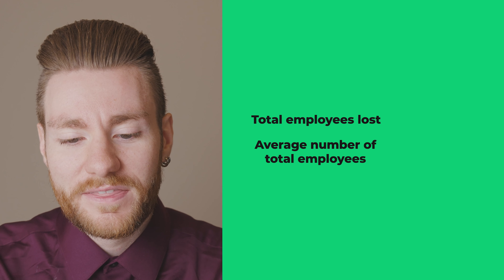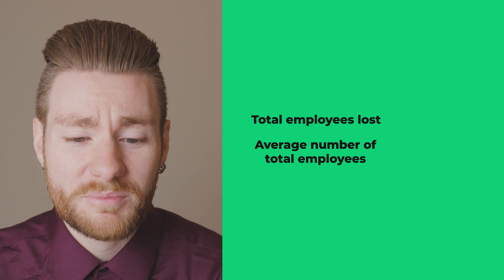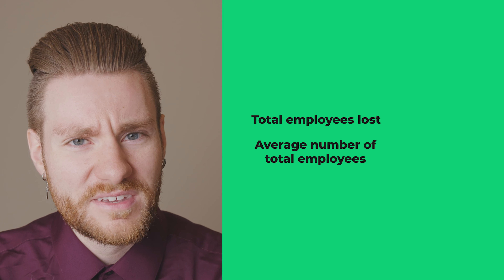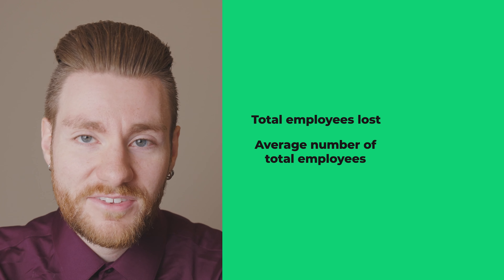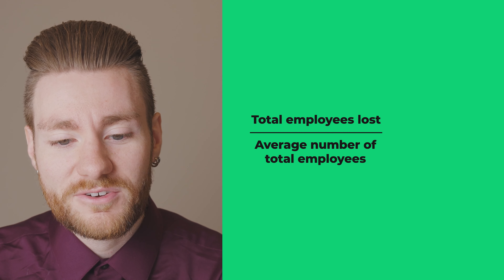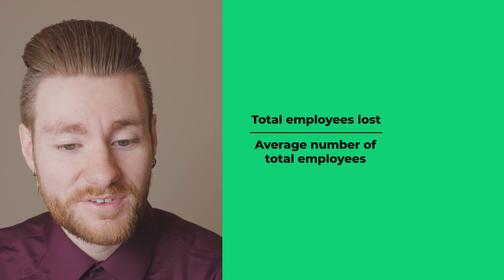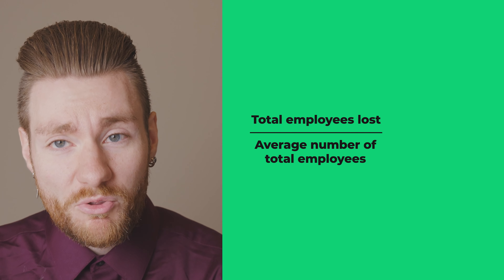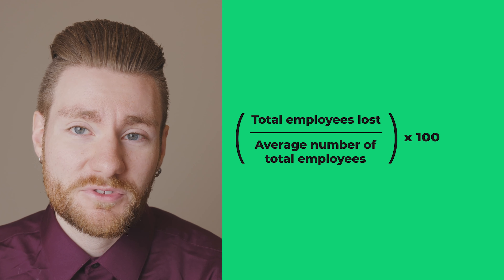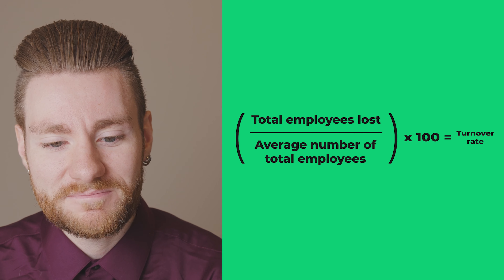Now, subtract the number of any temporary or seasonal employees from each total, as you don't usually count those. Once that's complete, divide the sum of employees who have left by the average number of total employees. Multiply that number by 100, or simply move the decimal two places to the right, and you'll get your turnover rate.